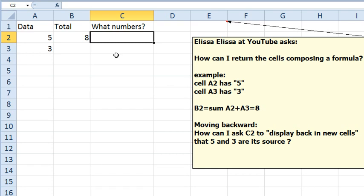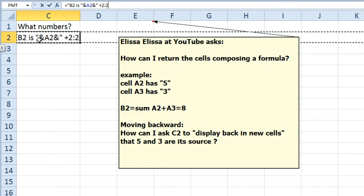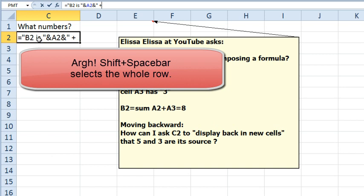That's interesting. Alright, so I think what we'll do, we'll say equal B2 is, in quotes, ampersand A2, and then ampersand, I'll probably do space plus space, ampersand, and then come over and point to B3.